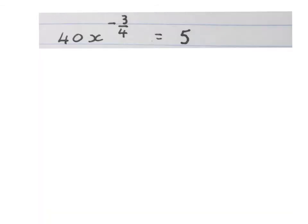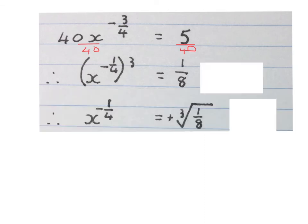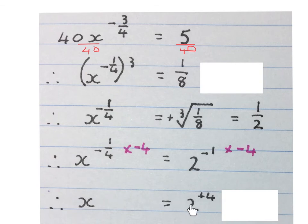Here is our next equation. We divide by 40 on both sides and break up the exponent, giving us 1 over 8, which is the same as 2 to the power of minus 3. First we get rid of the cube by taking the cube root of both sides. The cube root of one eighth is one half, and one half is 2 to the power of minus 1. To get rid of the minus a quarter exponent, we multiply by minus 4 on the exponents of both sides, so x equals 2 to the power of positive 4, meaning x equals 16.